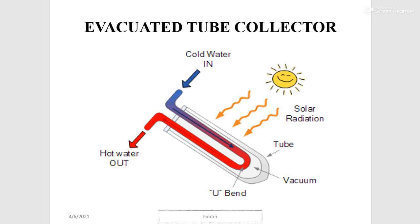This schematic diagram explains the working principle of the evacuated tube solar collector. The outer tube transmits light, and the working fluid passing through the inner tube absorbs the light and becomes hot. The heat energy from the hot fluid cannot escape to the surrounding environment because the space between the two glass tubes is vacuum — vacuum being a poor conductor of heat.